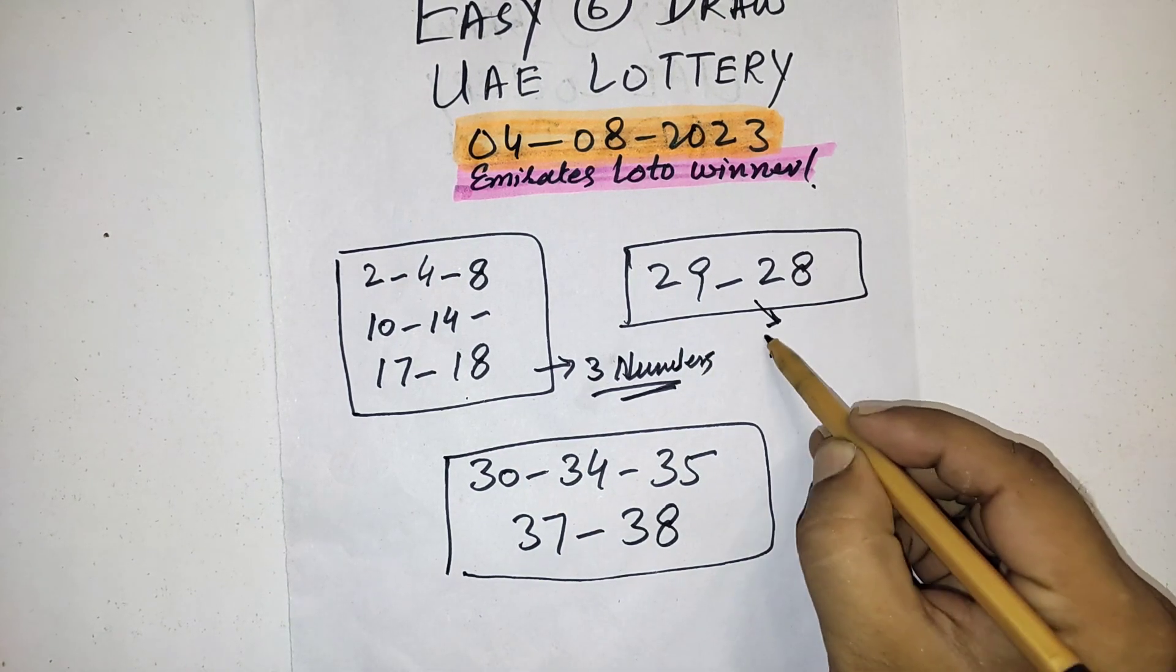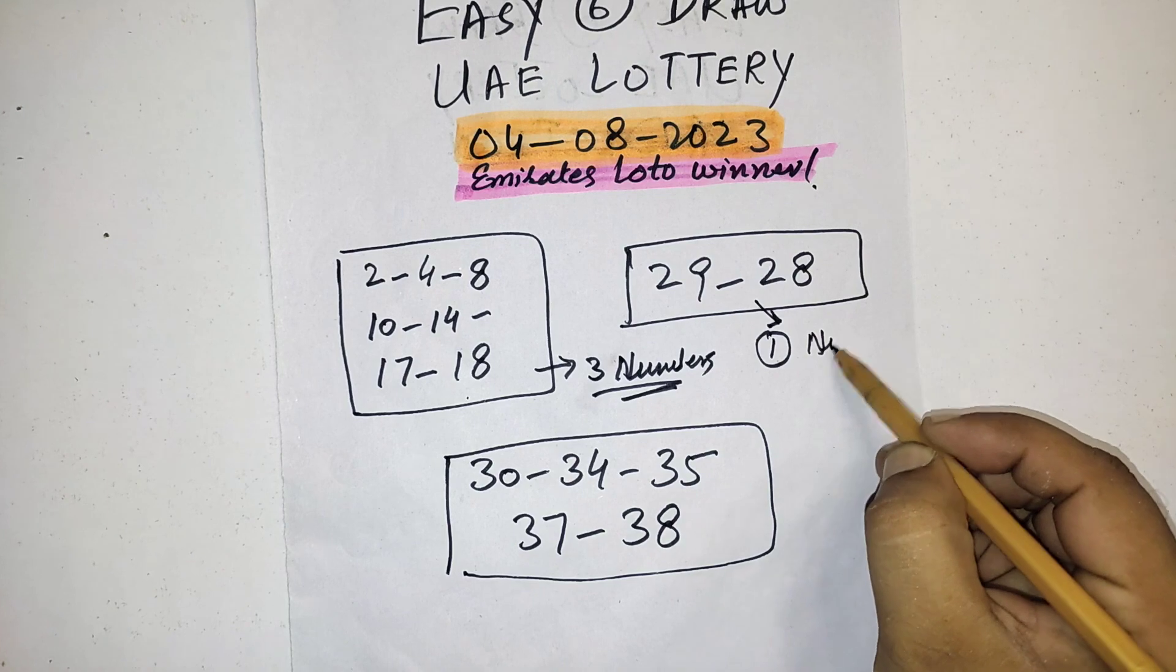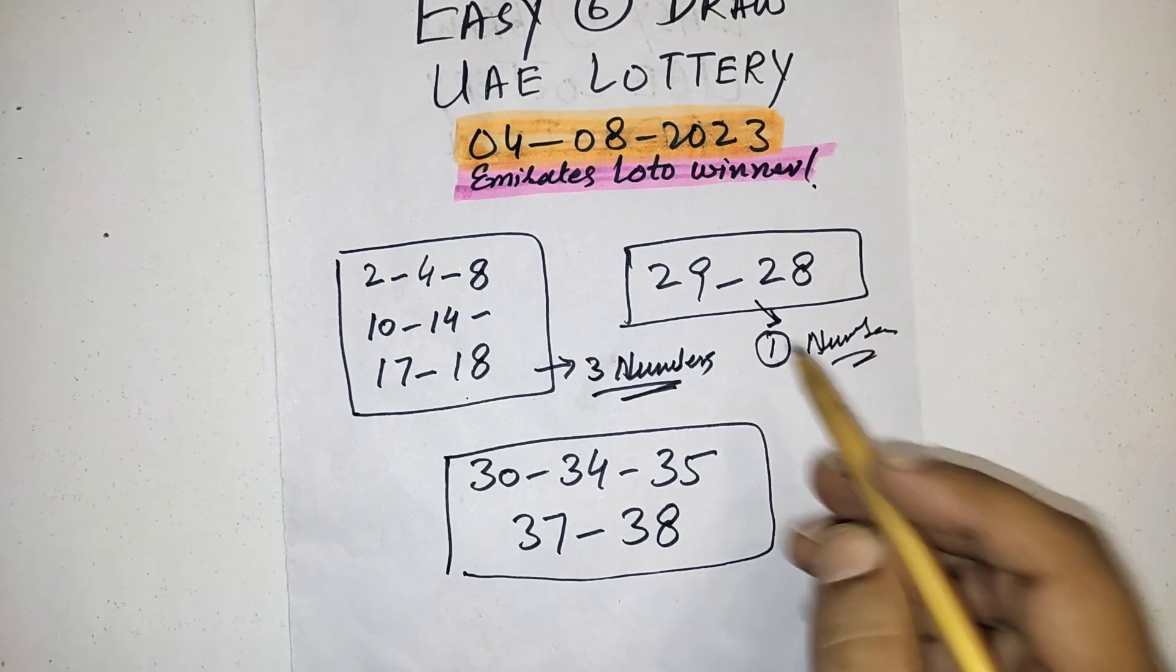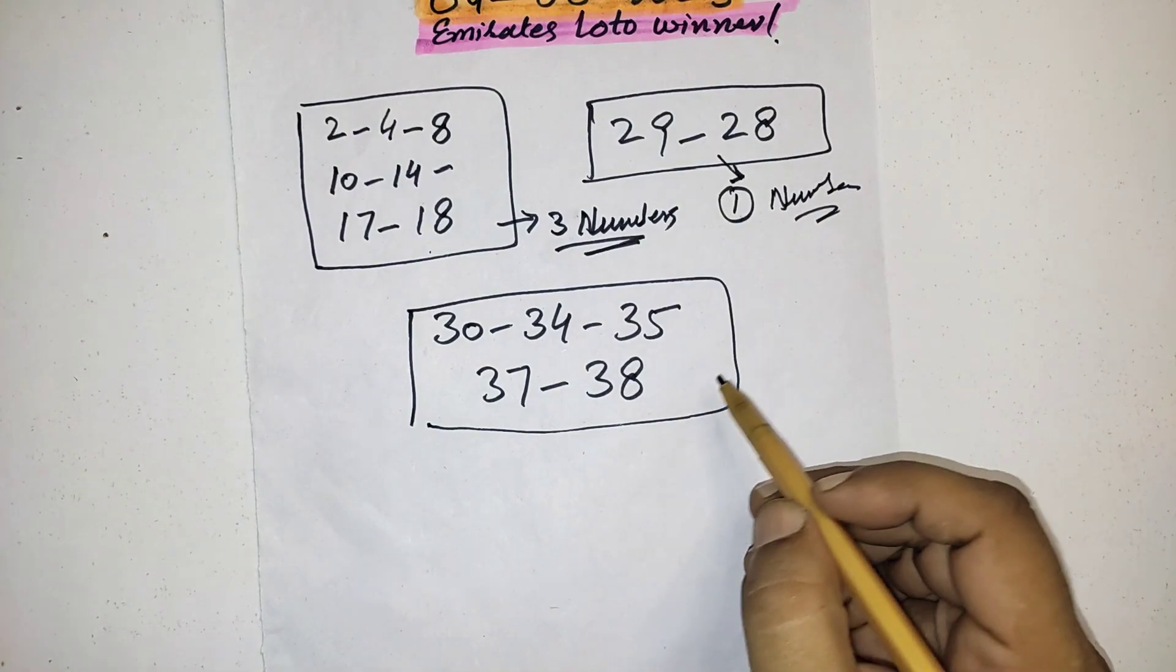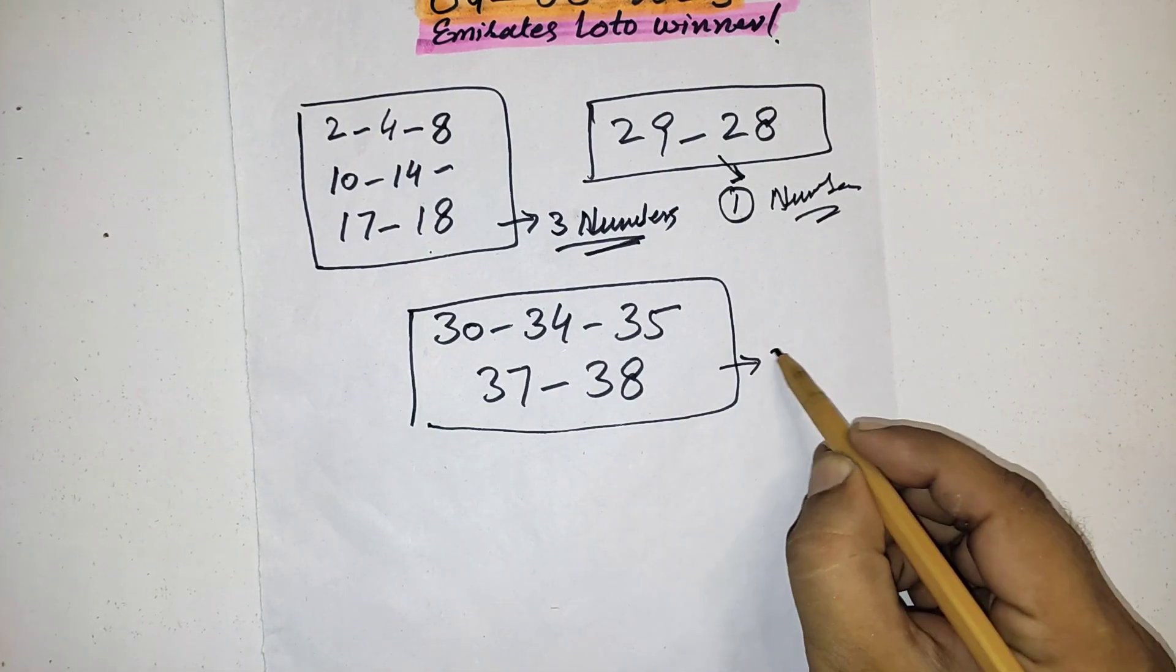From here you should select only one number, 29 or 28. And third, you should select from here two numbers.